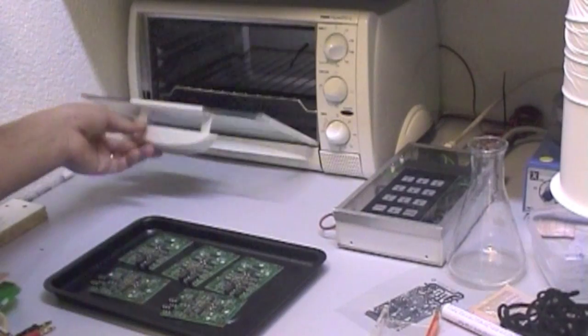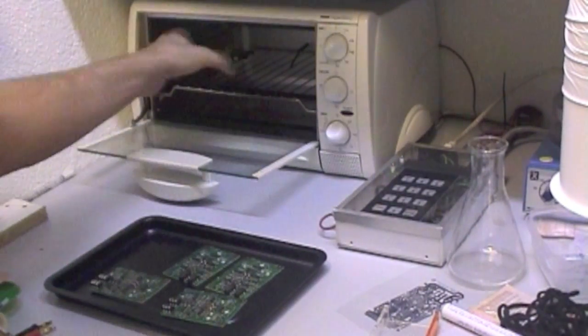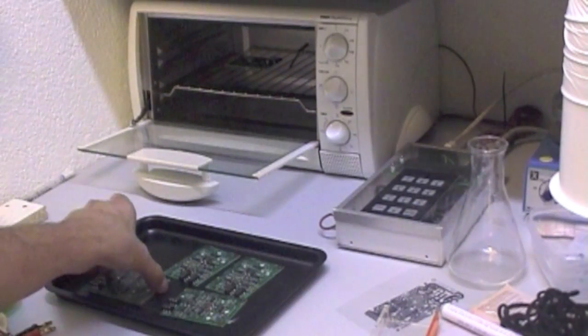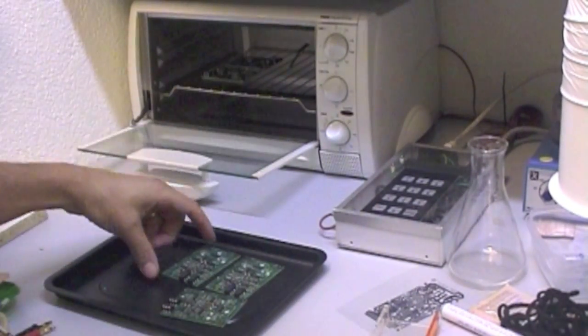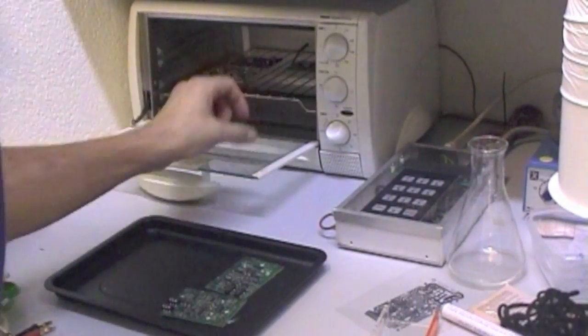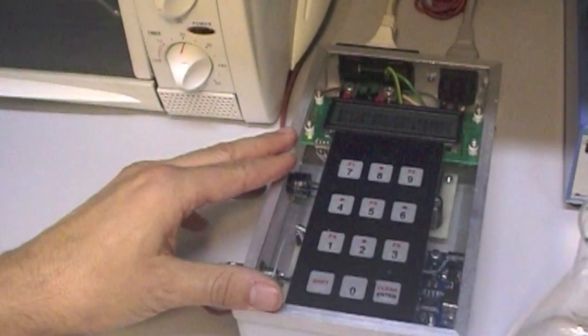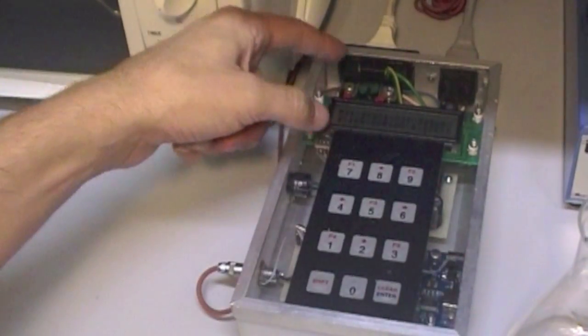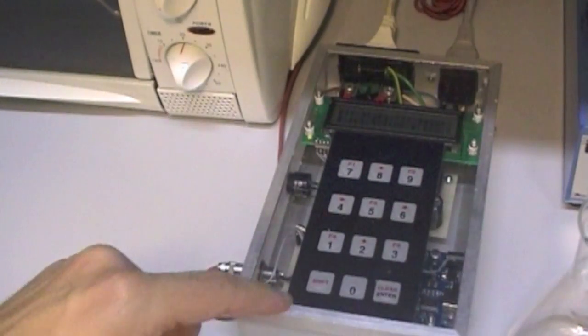Now the boards go into a temperature controlled oven for reflow soldering. The temperature controller is basically an Arduino connected to a power switch, a display and a keyboard.